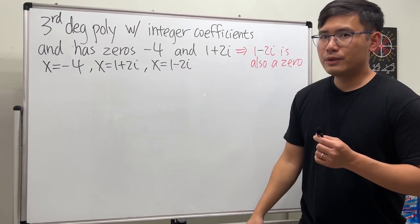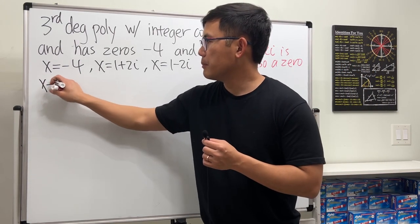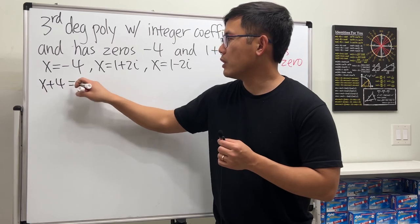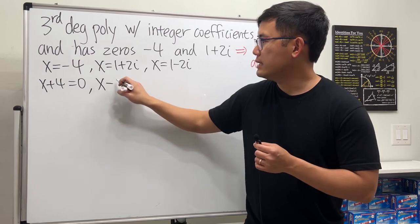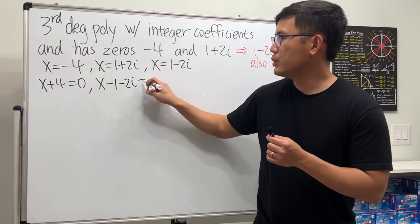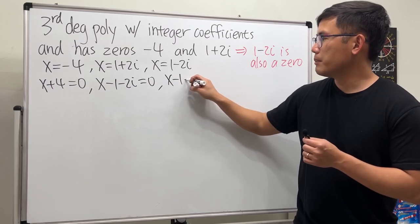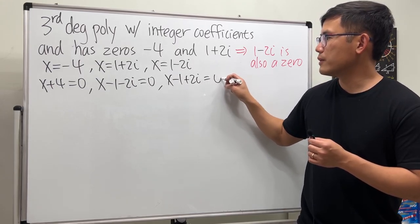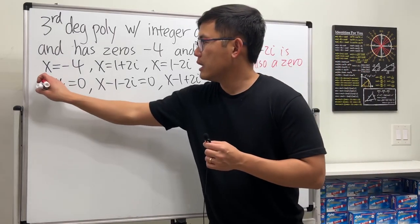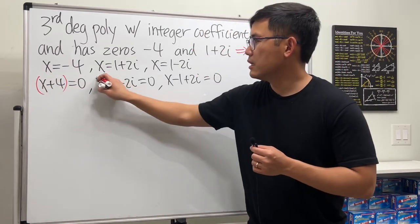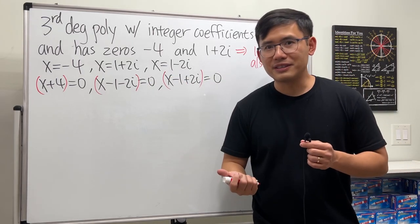Let me bring these to the other side. We get x+4 = 0, then x-1-2i = 0, and lastly x-1+2i = 0. The reason we did this is because each of these is a factor that will help us generate the cubic polynomial.